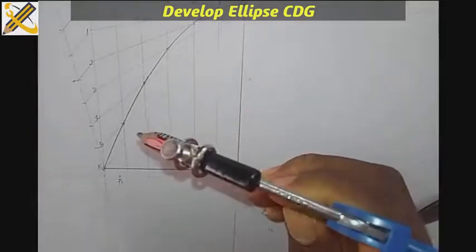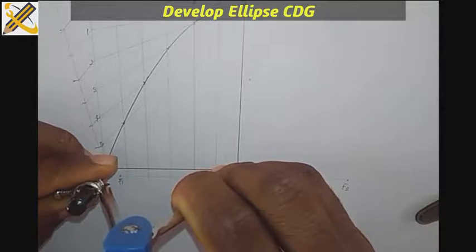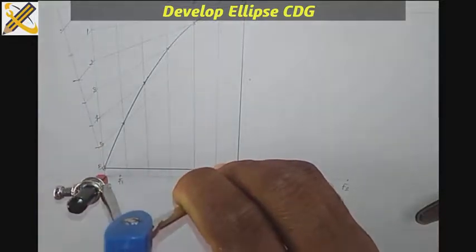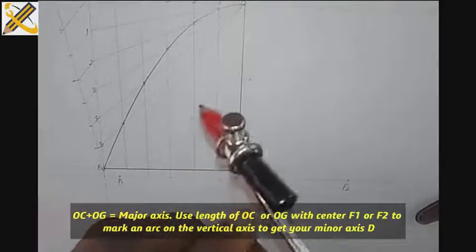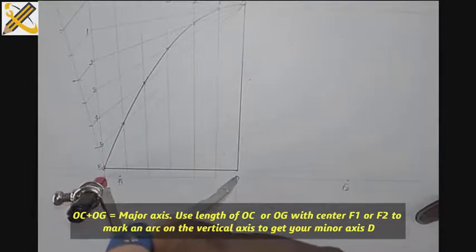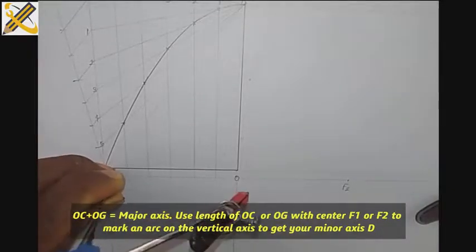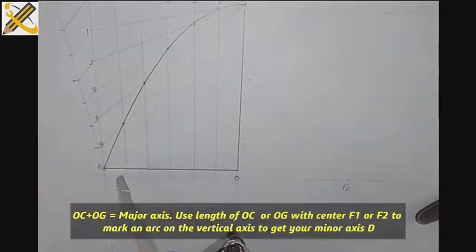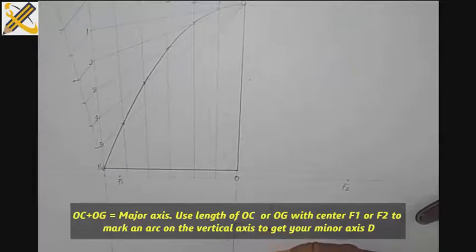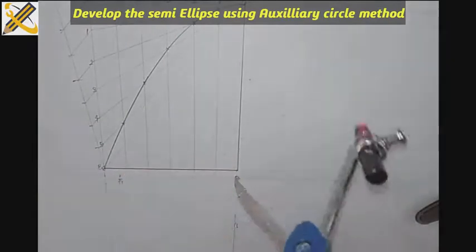From point O to this junction here, that's our major axis. Just place the same dimension, place it on point F1 and strike an arc on this vertical line. The portion where this arc meets my vertical line is point D and that is my minor axis. So now I'm going to develop the ellipse using the auxiliary circle method.